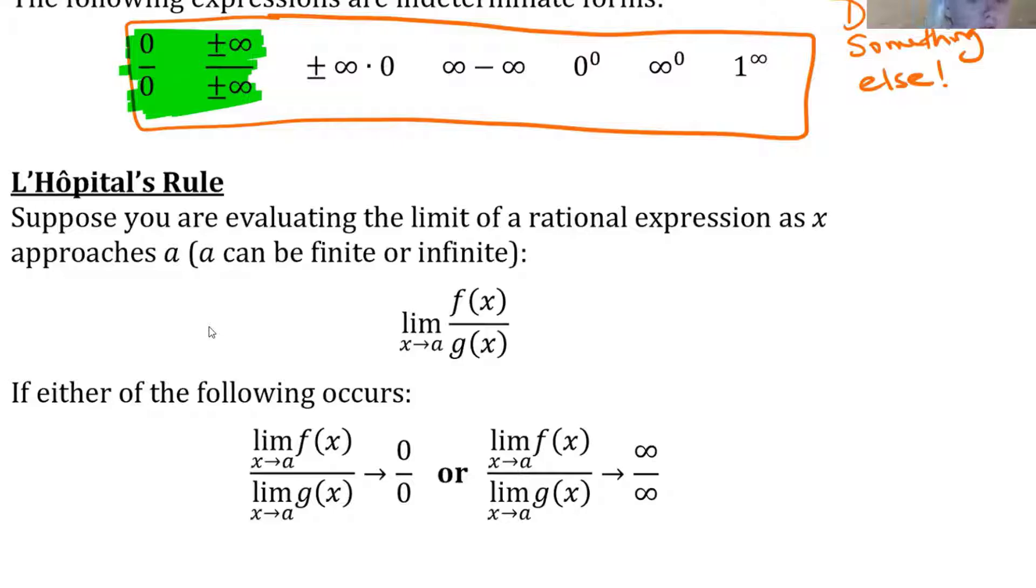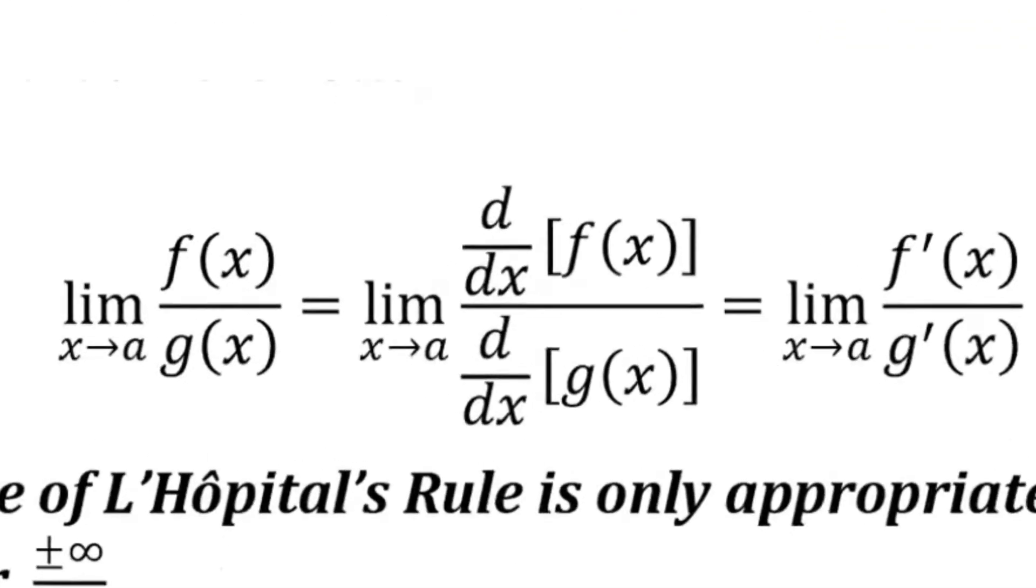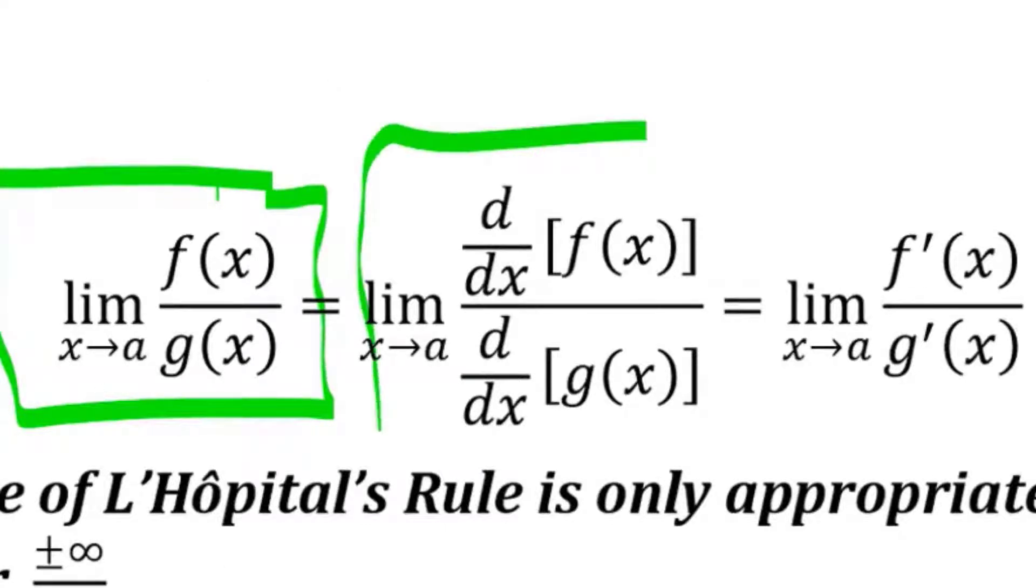Then the limit of the quotient of the functions f over g is exactly the same as the limit of the derivative of the top function over the derivative of the bottom, which is pretty cool.